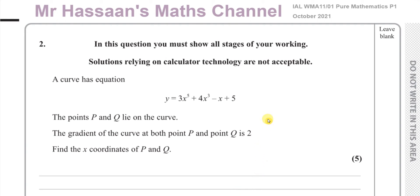Welcome back, this is Mr. Hassan's Maths Channel and now I'm on question number 2 from the October 2021 International A-Level Pure Mathematics P1 paper. This question is about differentiation. It tells us a curve has equation y equals 3x to the power of 5 plus 4x cubed minus x plus 5. The points P and Q lie on the curve. The gradient of the curve at both points P and Q is 2. Find the x coordinates of P and Q.